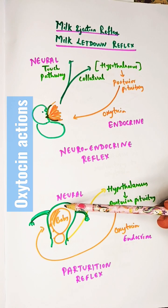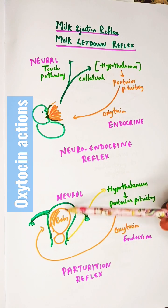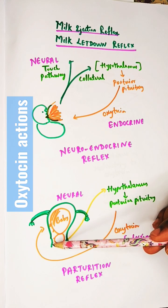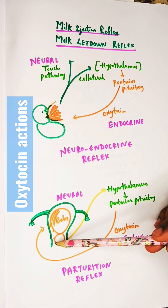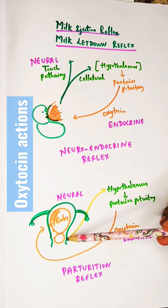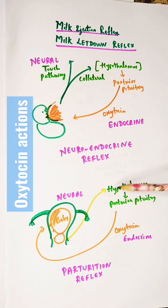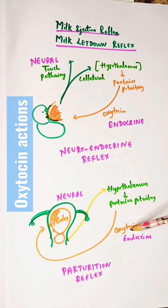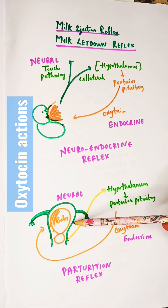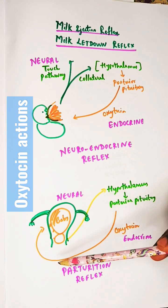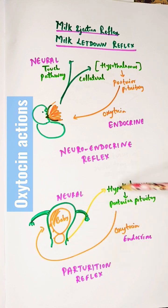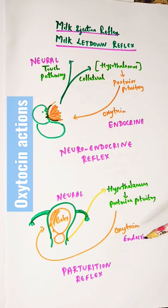Another example is the parturition reflex. When the mother is in labor and the uterus is contracting, the baby's head pushes and expands the cervix. Stretch receptors and the pain pathway get stimulated, which stimulates the hypothalamus and posterior pituitary to release oxytocin. Oxytocin then causes contraction of the fundus of the uterus, helping in the delivery of the baby. This is the parturition reflex — again an example of a neuroendocrine pathway.